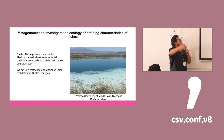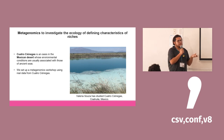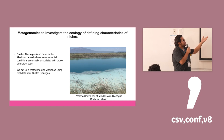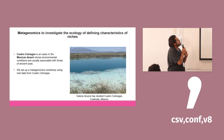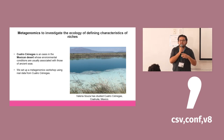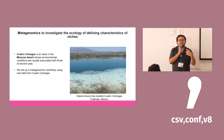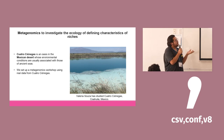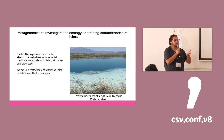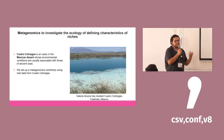Regarding metagenomics, as I mentioned, there are places studied for different reasons. In this case, Cuatrociénegas is an emblematic place in Mexico because it has conditions associated with ancient seas from many millions of years ago, making it a very interesting place for metagenomic analysis. It is studied by a researcher named Valeria Sousa, who has generated metagenomic data from it. In our lesson, we use real metagenomic data from Cuatrociénegas to perform this analysis.